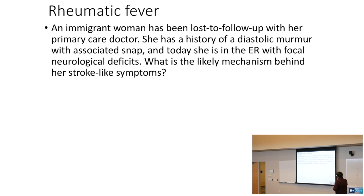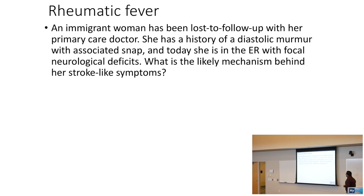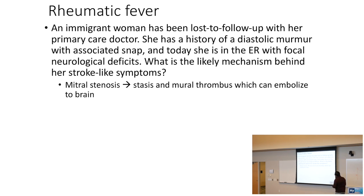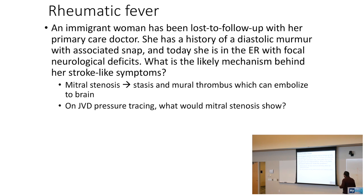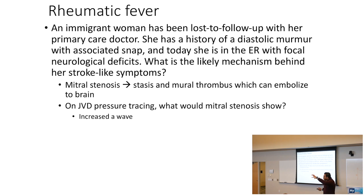An immigrant woman with a history of diastolic murmur with associated opening snap presents with focal neurological deficits. This patient had rheumatic fever causing mitral stenosis. Mitral stenosis causes stasis in the atrium, which can embolize to the brain. On JVP pressure tracing, mitral stenosis shows an increased A wave, because the atrium works harder to overcome the stenotic region.